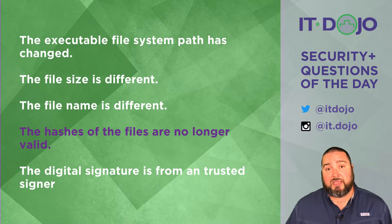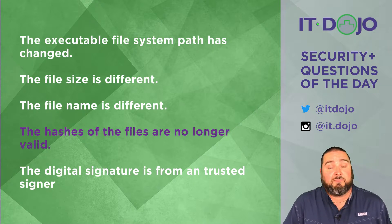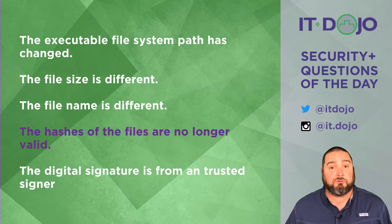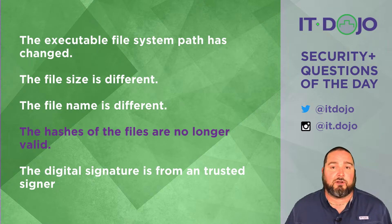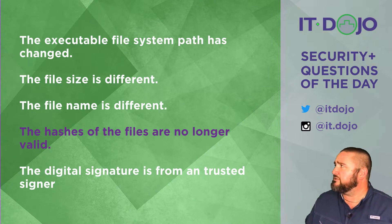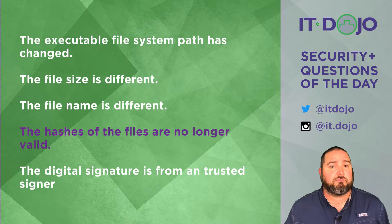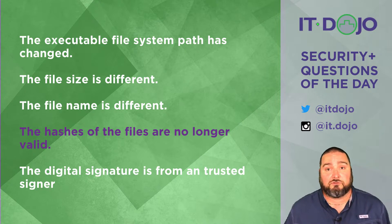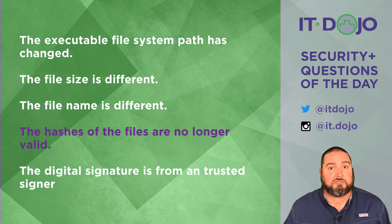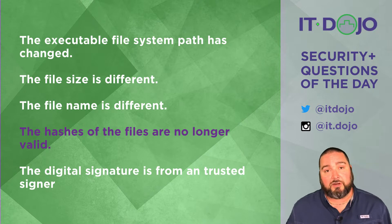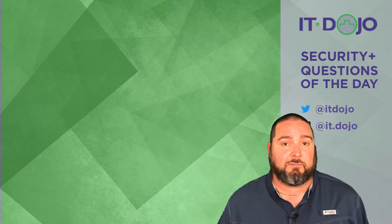We would need to update the cryptographic hashes of this file. For all the system can tell, this is now a malicious file that has replaced the known good — not something that's just been updated. The system can't tell the difference; to it, it's just not the same, so therefore it can't run. The last answer choice says the digital signature is from a trusted signer — no, that wouldn't be a problem. That would actually be a good thing. If the signing authority is actually from a trusted authority, that's positive. So only one right answer: the hashes no longer match.